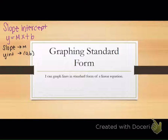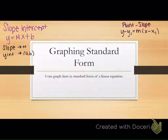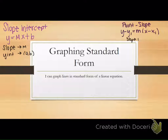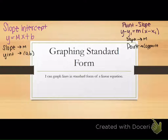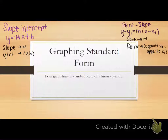The form you guys learned yesterday, which is your new form, is point-slope: y minus y1 equals m times (x minus x1). You need to know these formulas by the test next week. You need to know how to distinguish when it's in point-slope versus standard versus slope-intercept. So m is still your slope, but your point is the opposite of y1 and the opposite of x1. That's what you guys learned yesterday — you plot the point, then use the slope from that point.